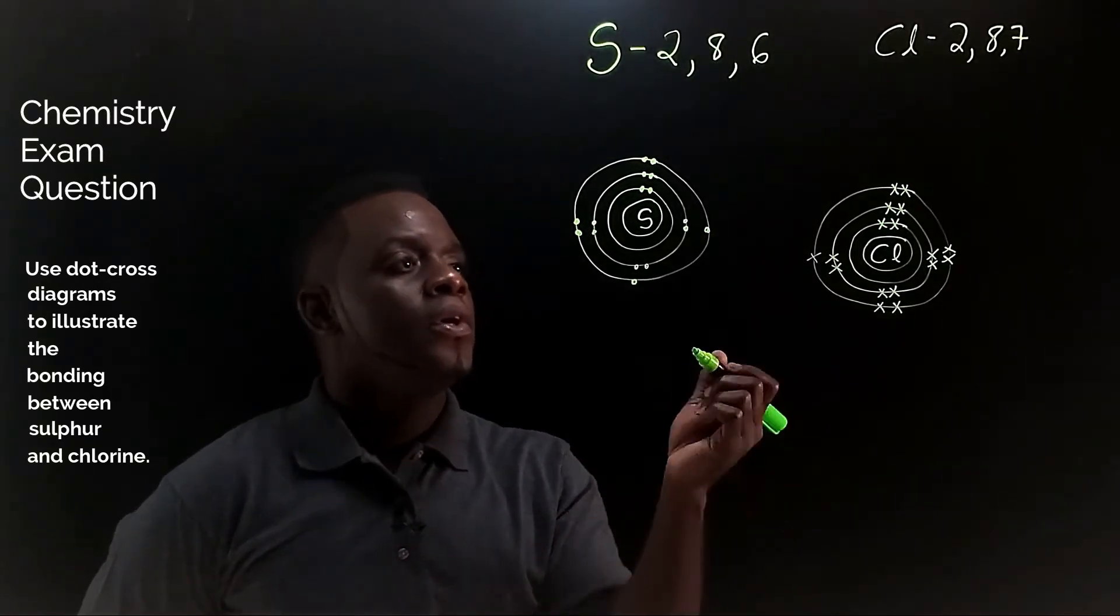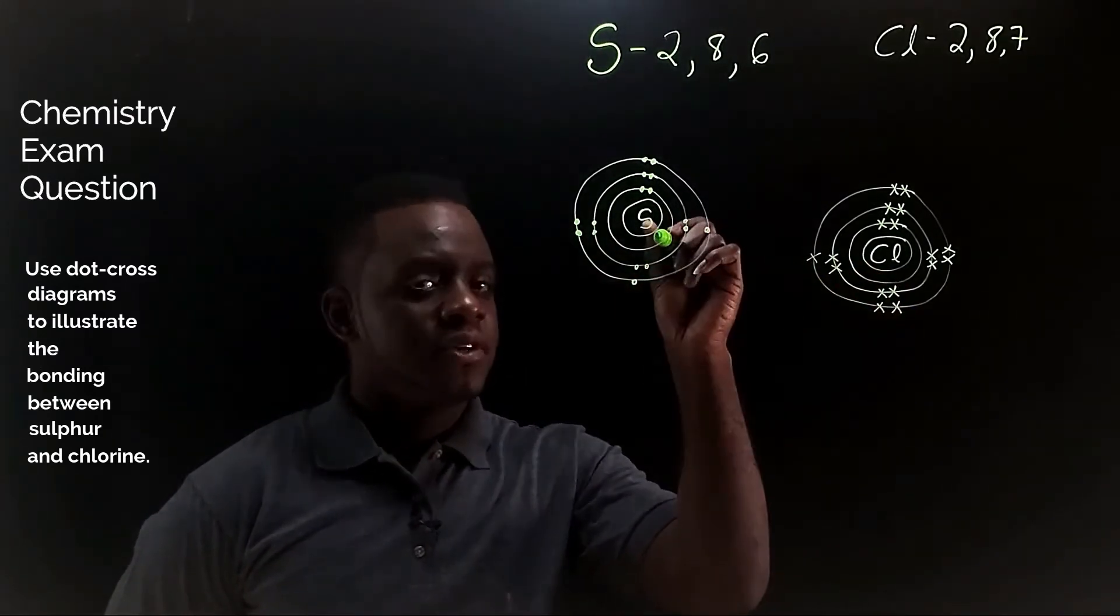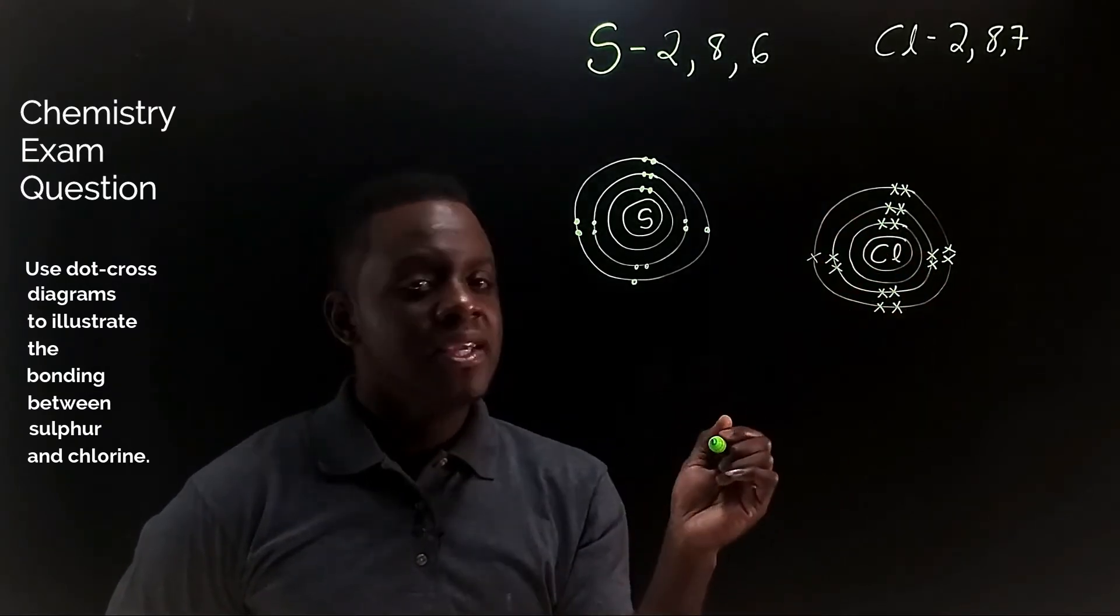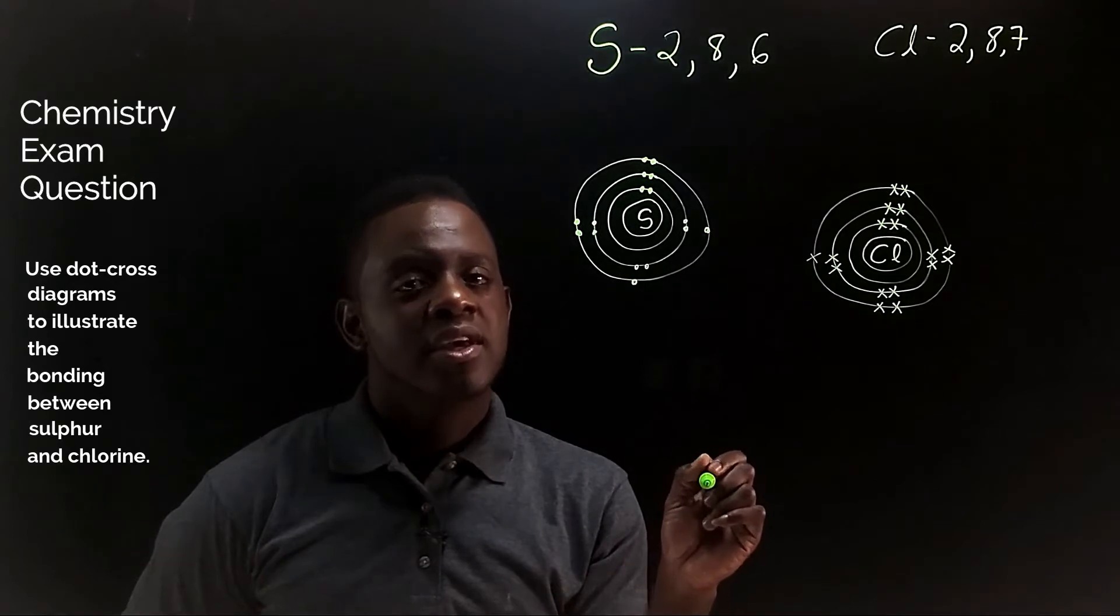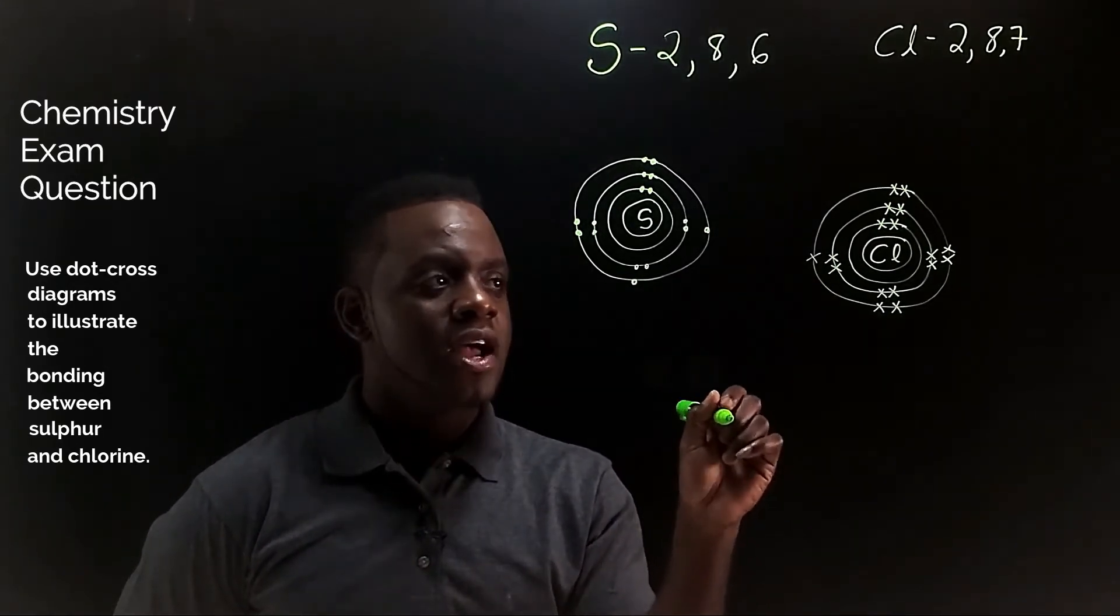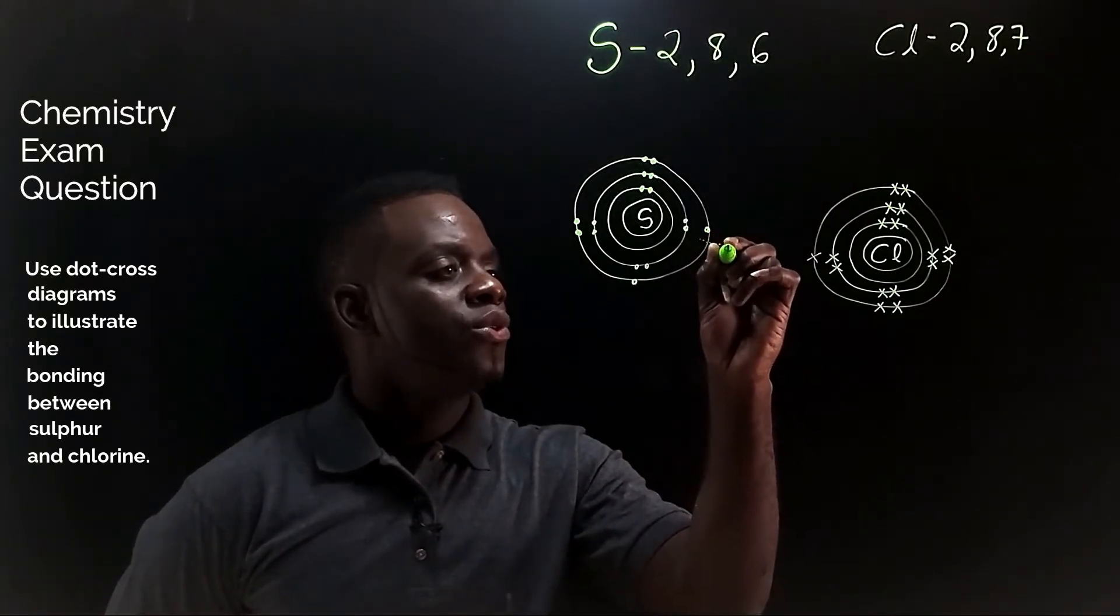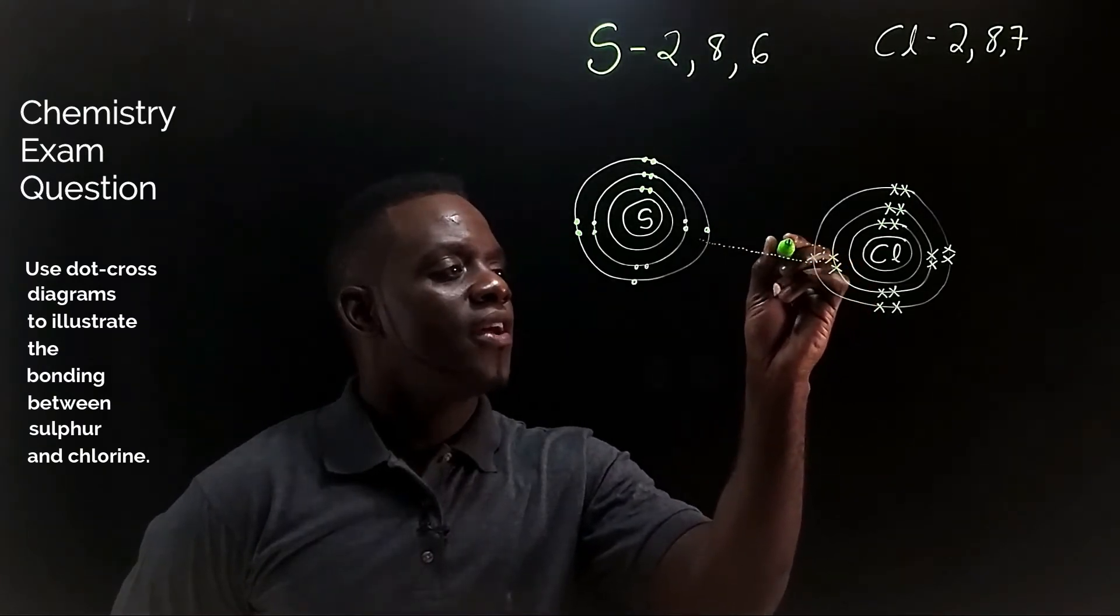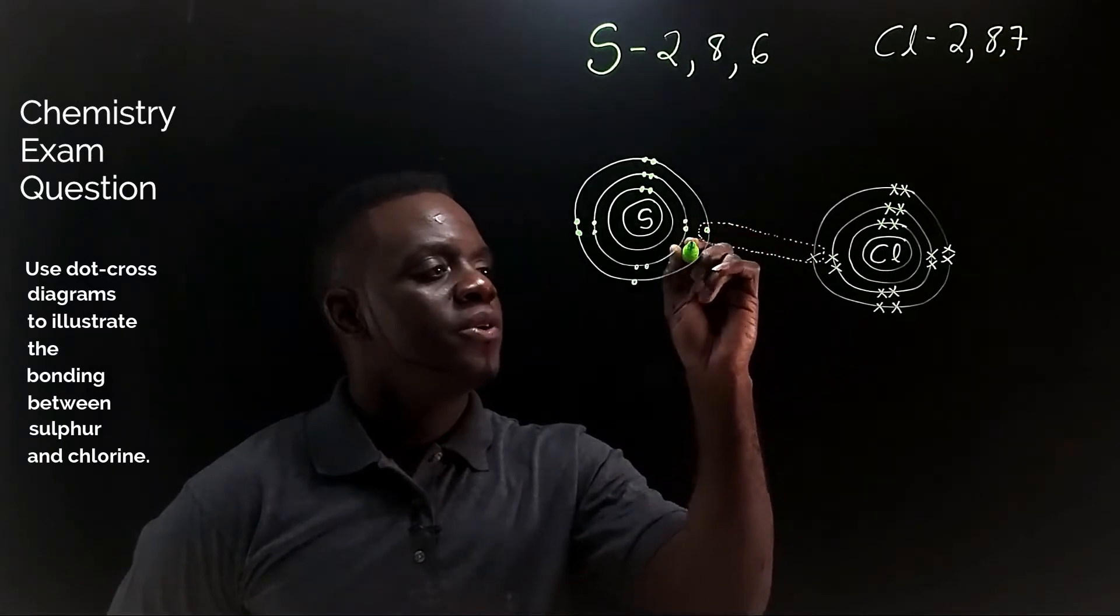So being a non-metal sulfur and chlorine too, a non-metal, means that they will share electrons in order to obtain their stable electron arrangement. And we'll use dotted lines to show the shared pair of electrons for sulfur and chlorine.